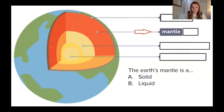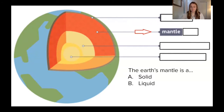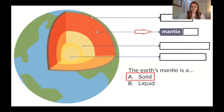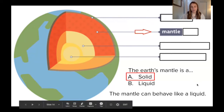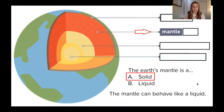Our next layer is our mantle. This was the one that was kind of tricky. Is the earth's mantle an A solid or B liquid? It's a solid — but remember, it's a solid that can behave like a liquid. So it's tricky. That liquid is kind of like honey or molasses; geologists call it the plastic mantle.